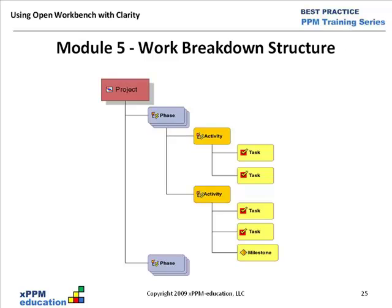How many breakdown levels of summary tasks are there? That's somewhat a user choice. In this example, I show a phase and activity — two levels of summary tasks above the detail. In our course exercise, we only have two levels: phase and detail, skipping the activity level. You can have two or three, but be careful with too many summary levels, as it can get confusing for people reporting work in timesheets and for the project manager trying to control the plan.